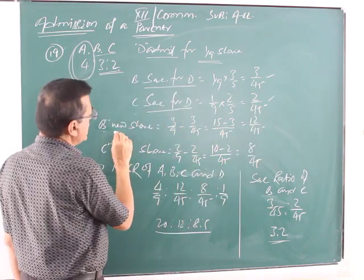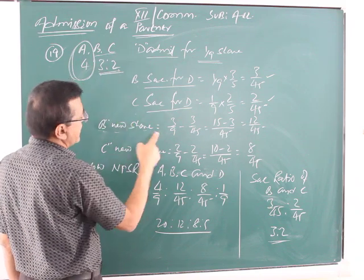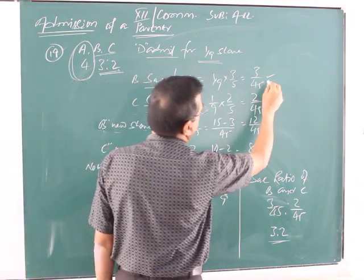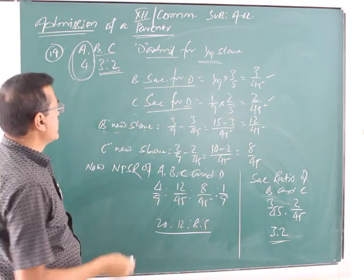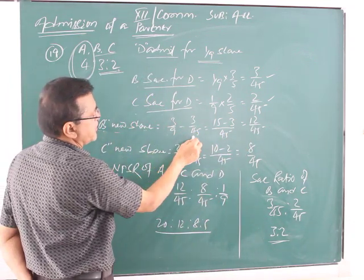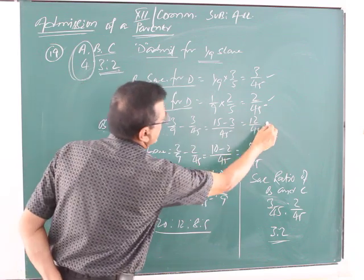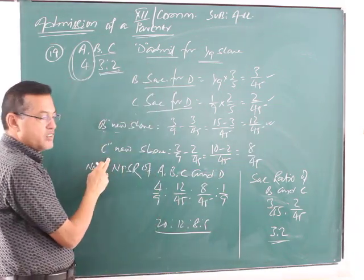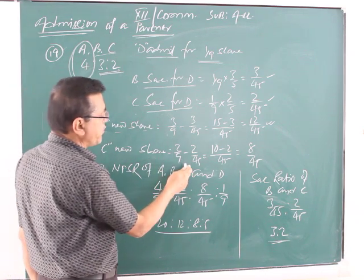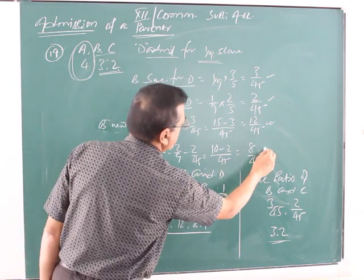Now, B's new share: B holds 3/9. He has sacrificed 3/45 to the interest of D. So now, 3/9 minus 3/45, you will get 12/45. C sacrificed, 2/9 minus 2/45, it will be 8/45.